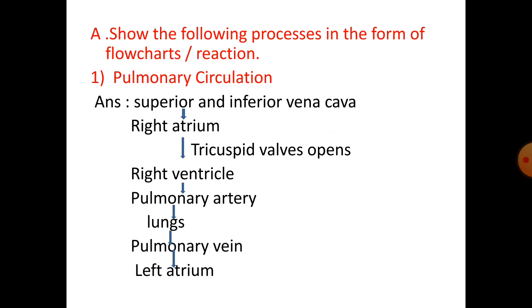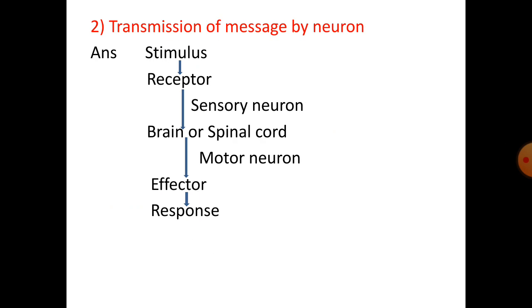First, pulmonary circulation. We start from superior and inferior vena cava, followed by right atrium. At that time the tricuspid valve opens, followed by right ventricle, then pulmonary artery, lungs, pulmonary vein, and left atrium.